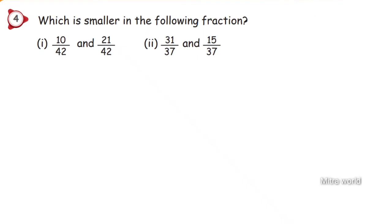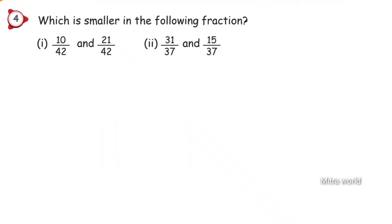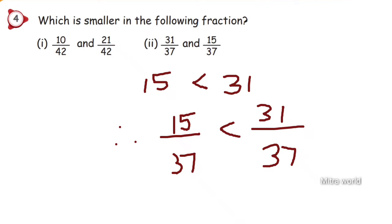Question 4: which is smaller in the following fractions? Number 1: 10 by 42 and 21 by 42. Denominators are the same. Since 10 is smaller than 21, therefore 10 by 42 is less than 21 by 42. Second: 31 by 37 and 15 by 37. Denominators are the same. Since 15 is smaller than 31, therefore 15 by 37 is less than 31 by 37.